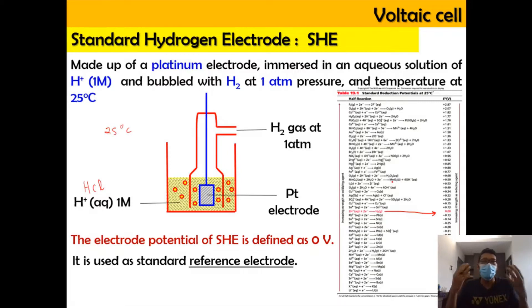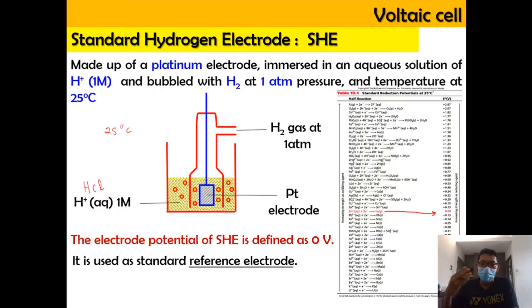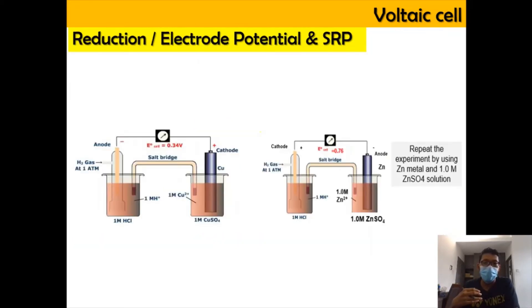The SHE is used as a standard reference electrode — it is our baseline. The SHE can be connected with another element in order for us to find the voltage. For example, SHE can be connected to copper, where copper acts as the cathode, or connected to zinc, where zinc acts as the anode.